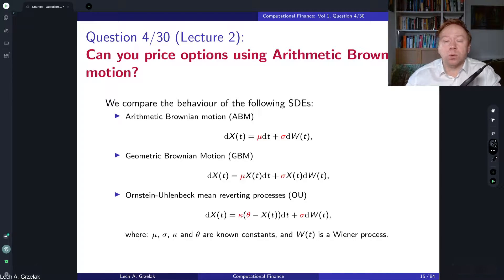Hello everyone, welcome to questions and answers based on the computational finance course. Today is question number four: Can you price options, in terms of European options, using arithmetic Brownian motion? This question is based on materials discussed in lecture number two.